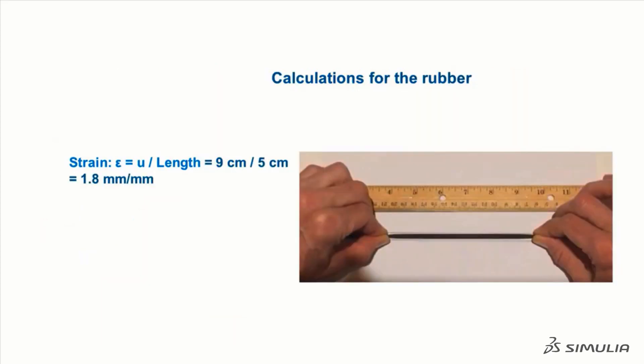Starting from an initial length of 5 cm, we elongated the rubber cylinder by 14 cm. This creates a strain of 1.8. Strain is a dimensionless quantity, but it is usually expressed as inch per inch or millimeter per millimeter.